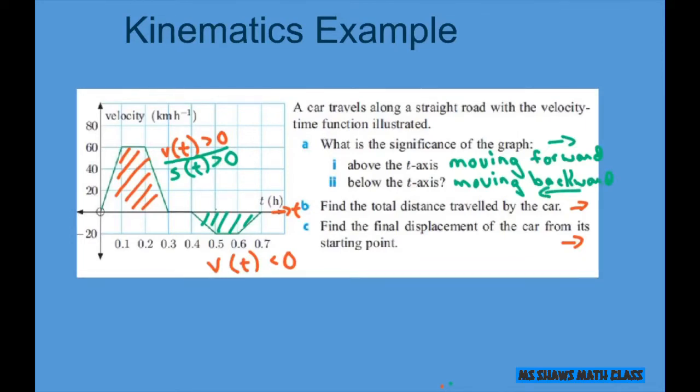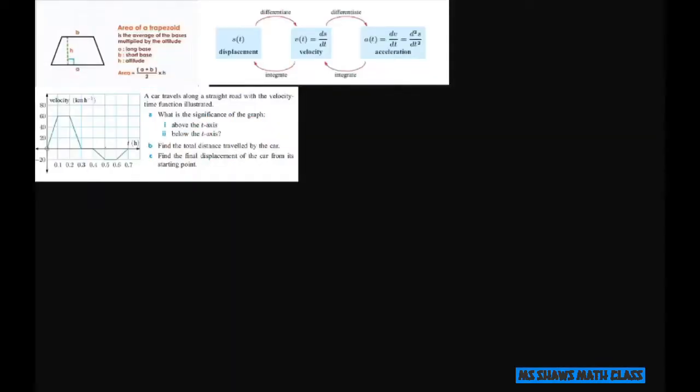So the next thing we want to do is find the total distance and the final displacement. We know that these two areas are displacement. So my displacement is the integral of v(t) dt. However, in this problem, we don't need to use it because this is the area.